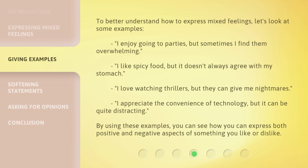To better understand how to express mixed feelings, let's look at some examples. I enjoy going to parties, but sometimes I find them overwhelming. I like spicy food, but it doesn't always agree with my stomach. I love watching thrillers, but they can give me nightmares. I appreciate the convenience of technology, but it can be quite distracting. By using these examples, you can see how to express both positive and negative aspects of something you like or dislike.